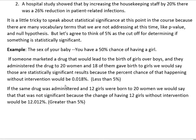If the same drug was administered to 20 people and 12 girls were born, we would say that that was not significant because the chance of having 12 girls in 20 births without any intervention is about 12%, and that is greater than 5%. So if you can see something happening without intervention at a rate higher than 5%, then we usually aren't able to say that our intervention made a big difference.